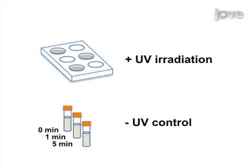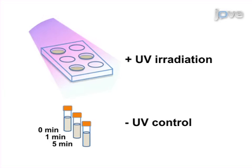As a second step, aliquots of cells collected at various time points during the chase are UV-irradiated to trigger the formation of covalent bonds between the protein of interest and any factors that it is interacting with.